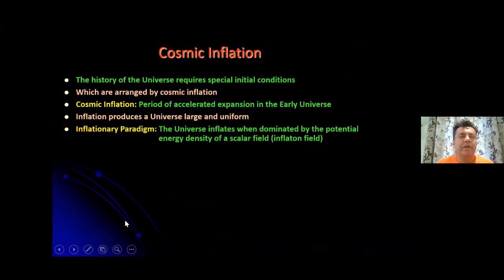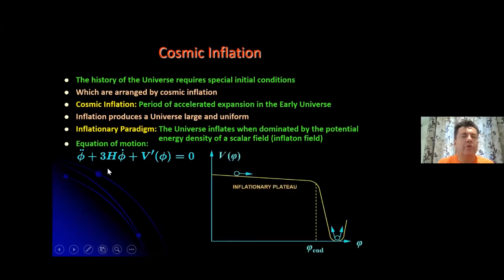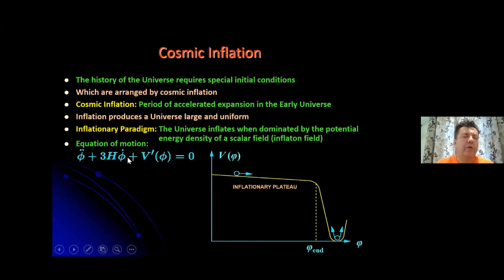In fundamental physics, inflation is usually modeled through the so-called inflationary paradigm, which says that the universe inflates when dominated by the potential energy density of a scalar field called the inflaton field. The equation of motion of a homogeneous scalar field in an expanding universe has a form identical with the equation of motion of a body sliding down a potential under the effect of friction, quantified by the Hubble parameter H. So to help our intuition, it's useful to consider the inflaton as a ball rolling down a potential under the influence of Hubble friction.